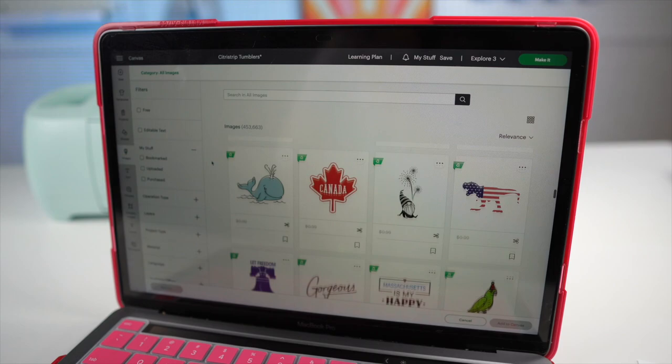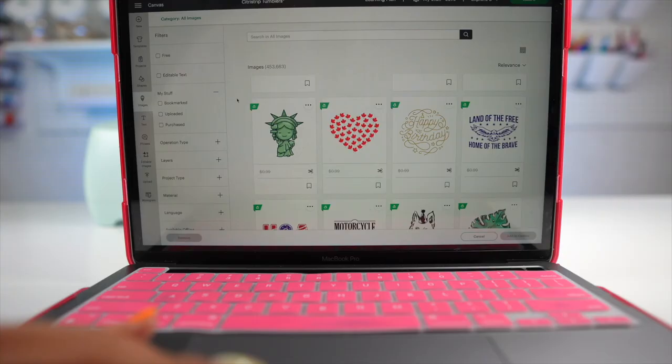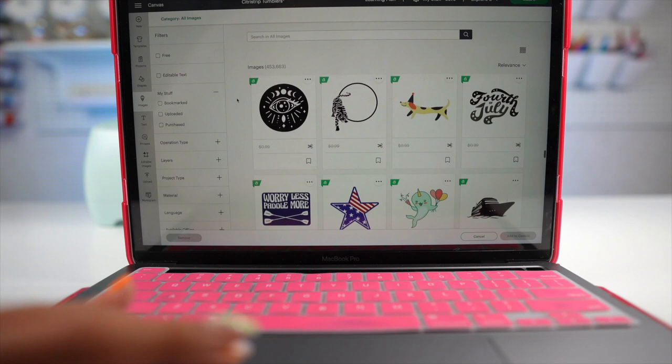On Cricut Design Space you could either choose to search through their images or upload your own. Since we'll be using Citrus Drip to create an engraved effect, it will be easier for you to work with single layer designs.